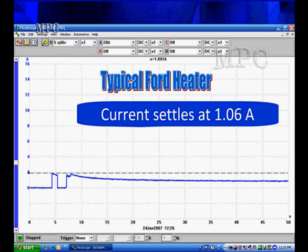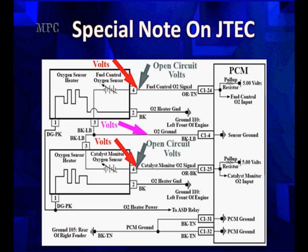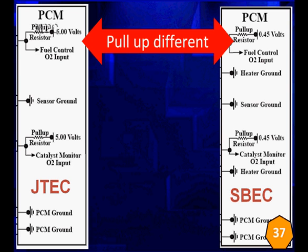In this particular case, this is a Ford where the current settled down at about 1.06 amps or about 1 amp. Did not need any duty cycle. So you'll have some that's duty cycle, some that are not. Some vehicles, like JTEC, have a special operating mode to identify heating failures.